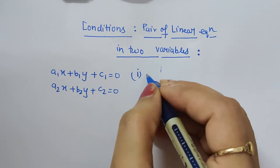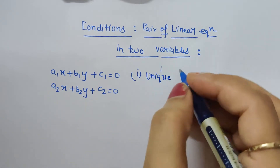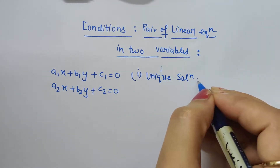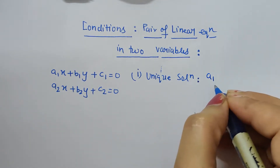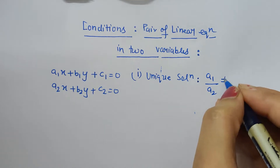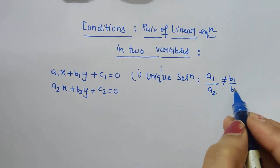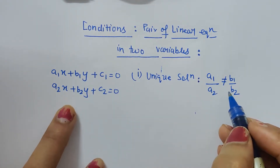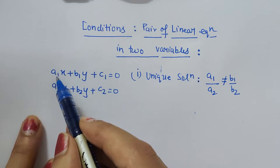What is unique solution? When there exists only a single solution. For this, the condition to be satisfied is a1 upon a2 should not be equal to b1 upon b2. If this condition is satisfied, then the pair of linear equations will have one solution — a unique solution.